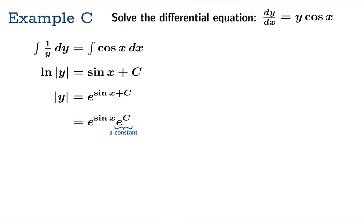e to the c is just a constant, so we can give that a new name - let's call it a. At this point you should notice that the exponential of anything is always positive, so e to the c is greater than zero. That means our constant can't just be any old constant - it's got to be a positive constant. That's reasonable because the left side is the absolute value of y, so it couldn't possibly be negative anyway.